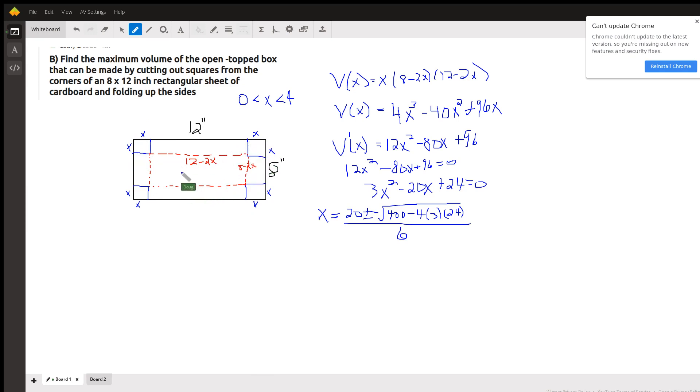We want to fold up the sides to create an open top box and find out what size we should make those squares to maximize the volume. Note that X has to be between 0 and 4, because if we try to cut more than 4 inches out, we won't have enough width for the rectangle.